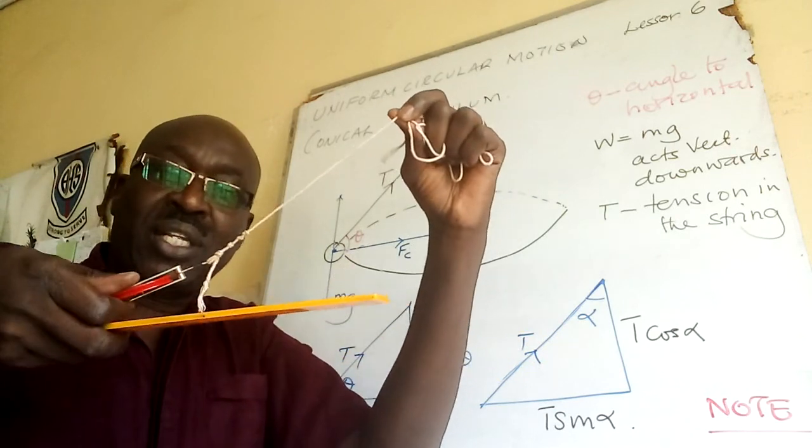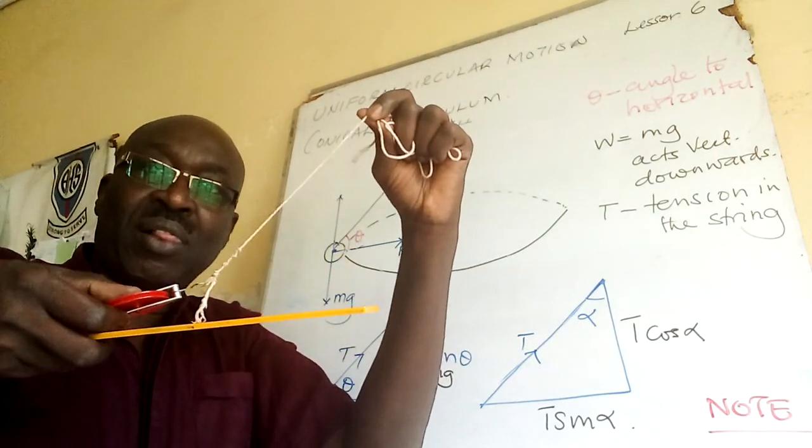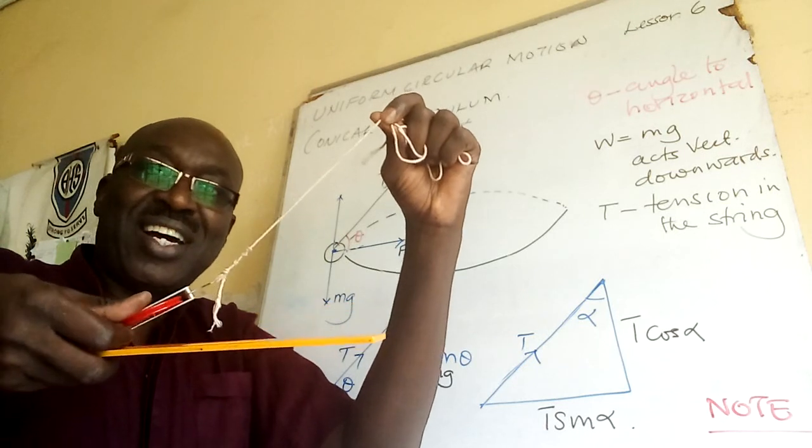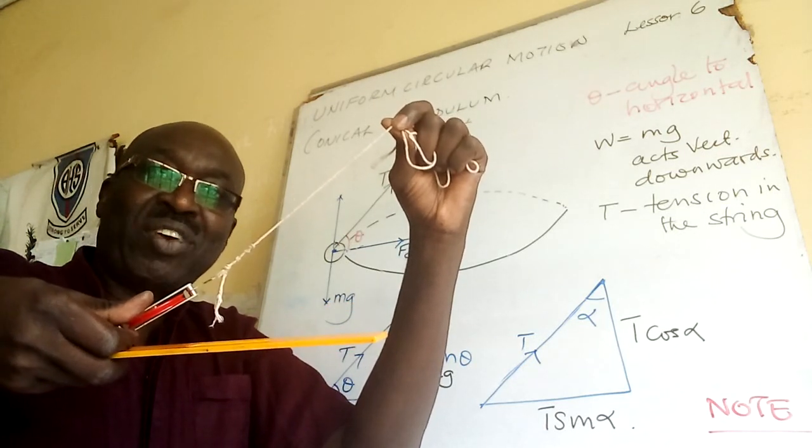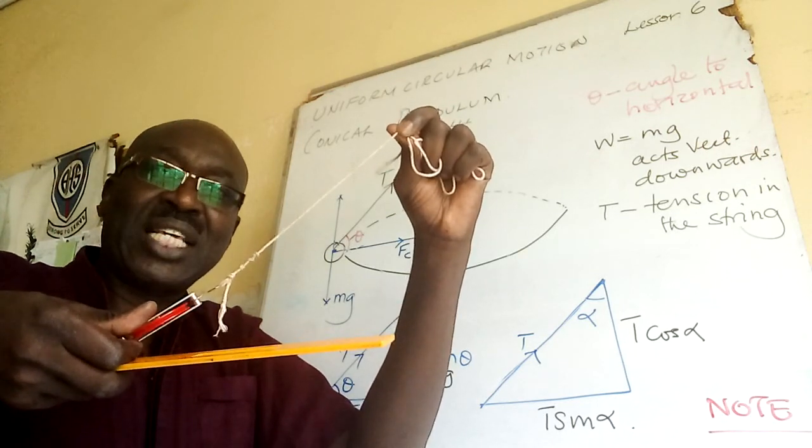So if I may hold the two, you can see there is an angle here. There is an angle between the ruler and the thread. That is the angle I am talking about as theta.